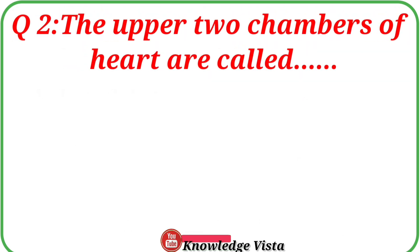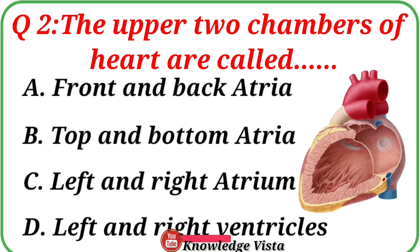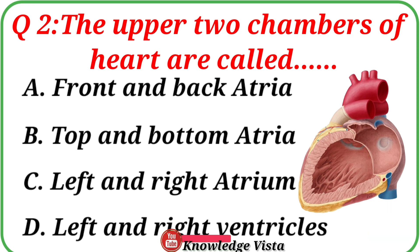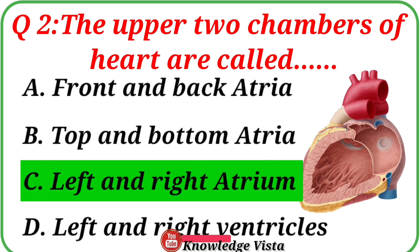Question No. 2. The upper two chambers of the heart are called. Your options are: A. Front and back atria, B. Top and bottom atria, C. Left and right atrium, D. Left and right ventricles. Correct answer is option C: Left and right atrium.